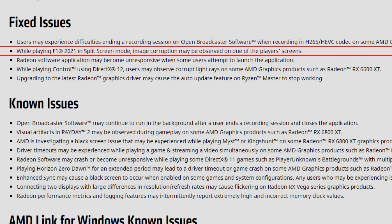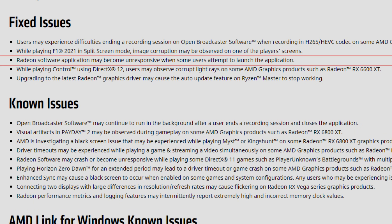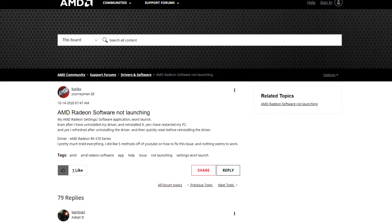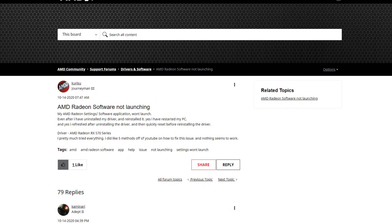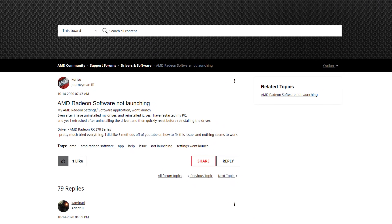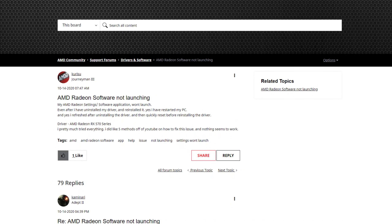While playing F1 2021 in split screen mode, image corruption may be observed on one of the player's screens — this is now fixed, good thing for split screen mode. Radeon Software application may become unresponsive when some users attempt to launch the application. I have lots of viewers saying this happens in some driver versions — they try to open the software and it becomes unresponsive, have to close it and reopen. It's annoying and it seems to be fixed.